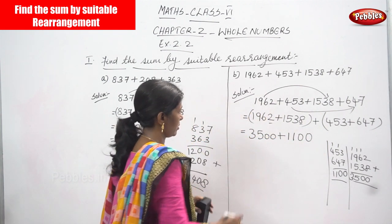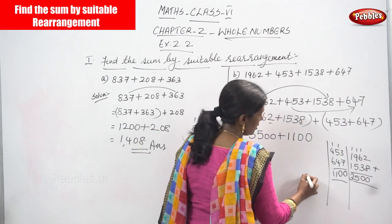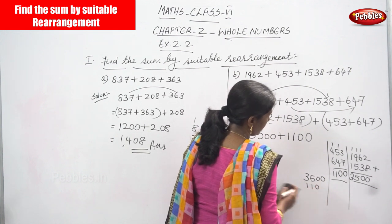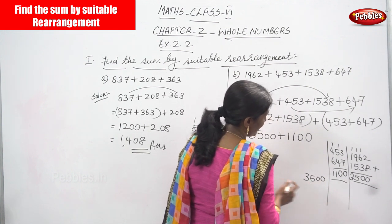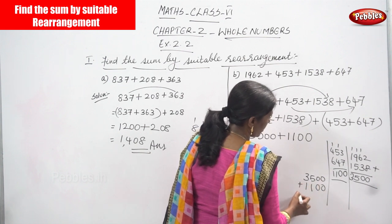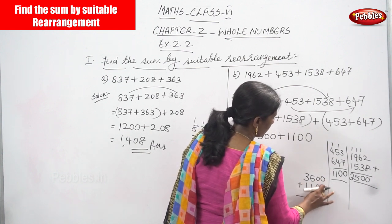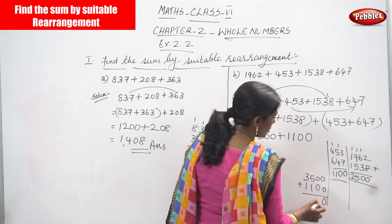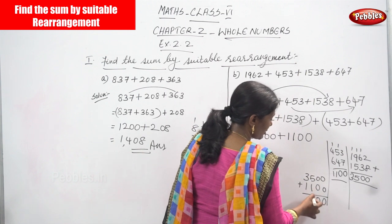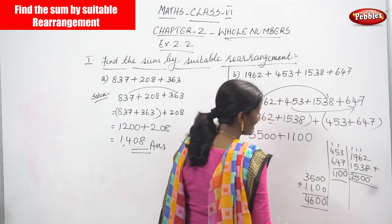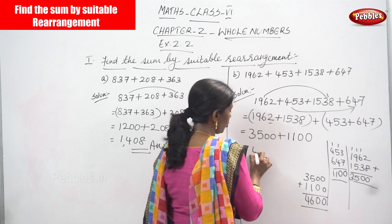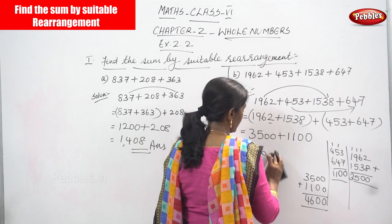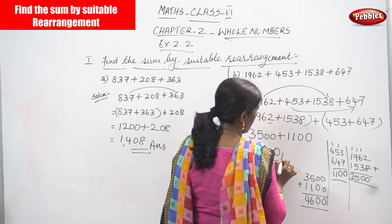Now adding all together: 3500 plus 1100. 0 plus 0 is 0, 0 plus 0 is 0, 5 plus 1 is 6, 3 plus 1 is 4. The answer is 4600. This is the right answer for question B.